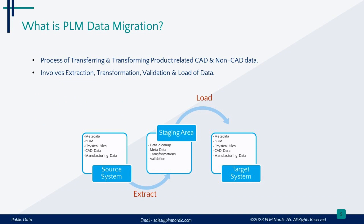PLM data migration is an art of transferring and transforming product-related data from one PLM system to the other. This process encompasses crucial steps such as extracting, transforming, validating, and loading data. The goal is to ensure accurate and usable transfer of information to the new PLM system. In our exploration, we'll uncover its significance, the types of data involved, and the strategies that underpin successful PLM data migration.